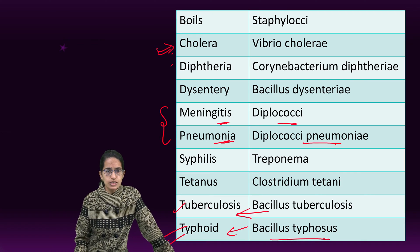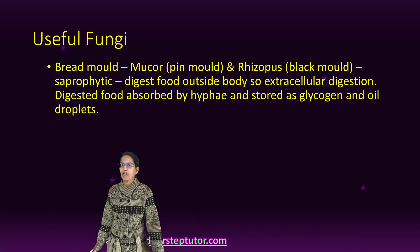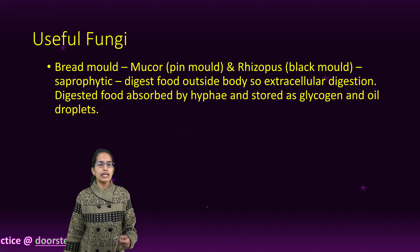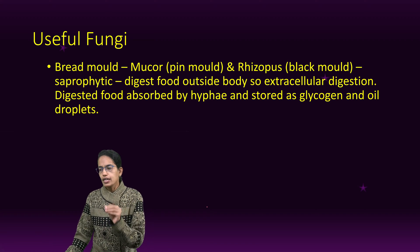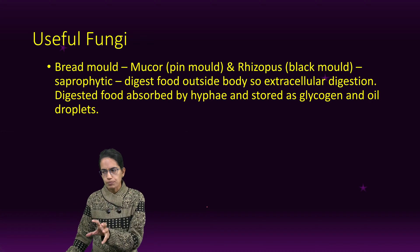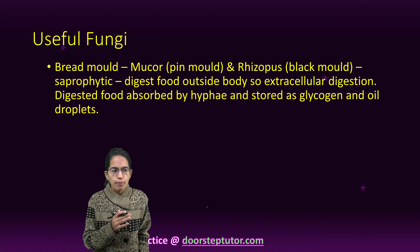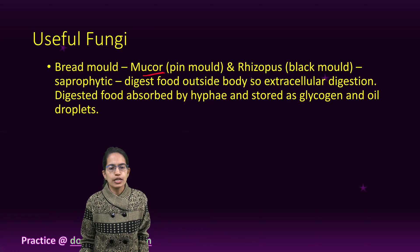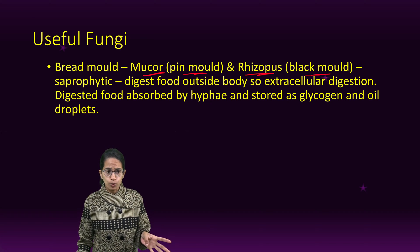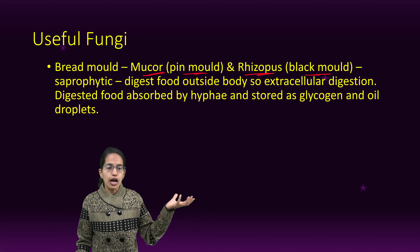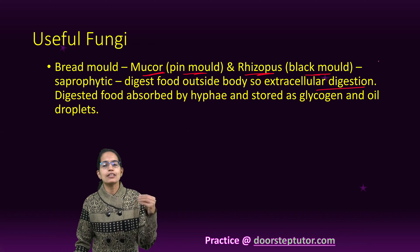Coming to fungi, let's talk about useful fungi. Good examples are yeast and mushroom, which is edible. Fungi are non-green and grow on dead organic matter, usually in a warm, damp atmosphere. Among them, bread mold comes in two forms: Mucor and Rhizopus. Mucor is known as pin mold and Rhizopus is called black mold. Both are saprophytic — they digest food outside their body, which is called extracellular digestion, and they do not prepare their own food, making them heterotrophs.